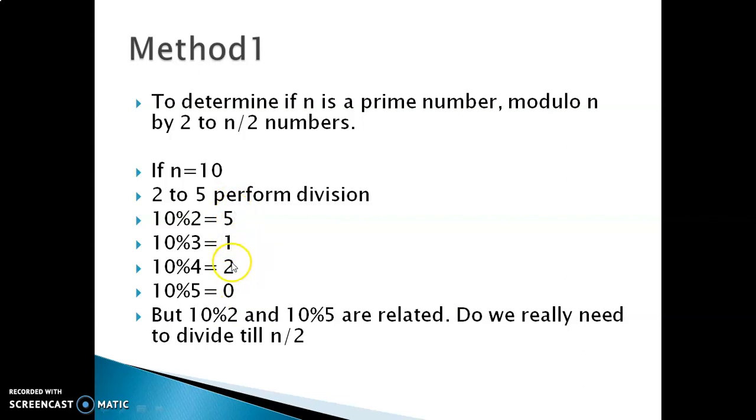Now if we want to perform the division by all the numbers, then as you can see, performing the division by 2 or by 5 gives us the same result. So this kind of division, performing division from 2 till n/2, is redundant.